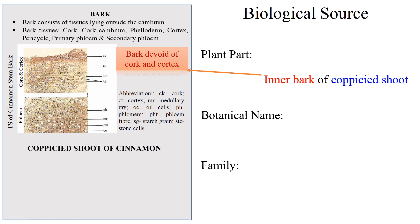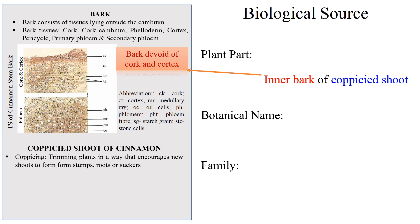Coppiced shoot. Coppiced shoot means the shoot which is obtained as a result of coppicing technique. Coppicing is the technique of trimming a plant in such a way that encourages new shoots to form from the stump, root, or suckers.